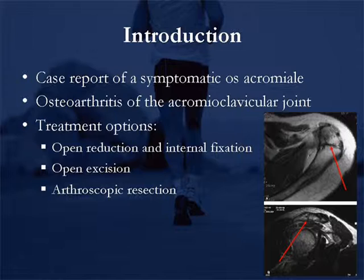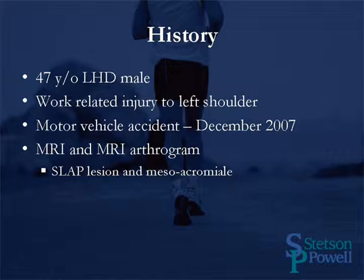This is a case report of a symptomatic os acromiale, in particular a mesoacromion. The patient also had underlying osteoarthritis of the acromioclavicular joint. Treatment options included open reduction and internal fixation, open excision, or arthroscopic resection of the mesoacromion.